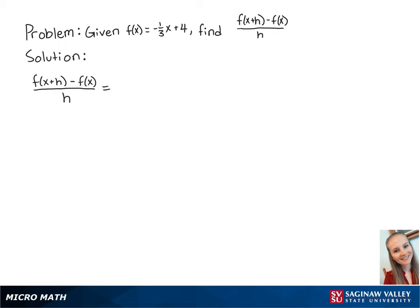For this problem, we have the function f of x equals negative 1 third x plus 4, and we're going to find the difference quotient f of x plus h minus f of x over h.